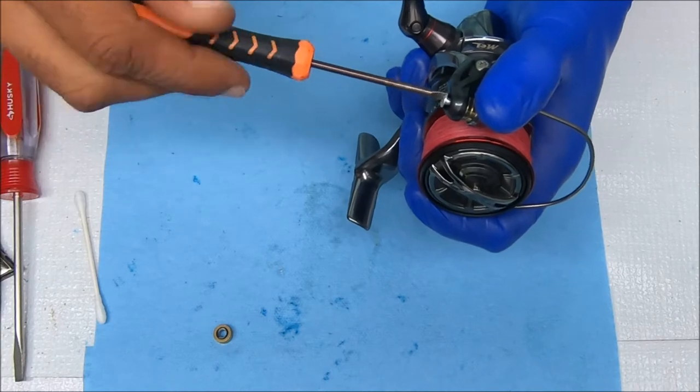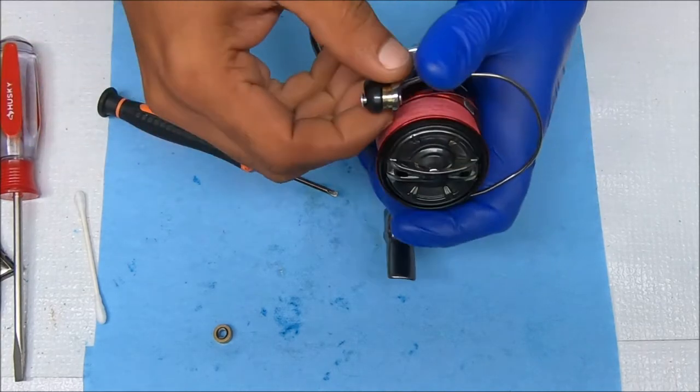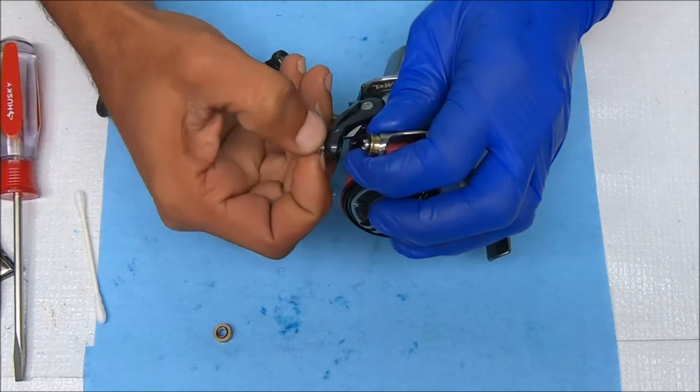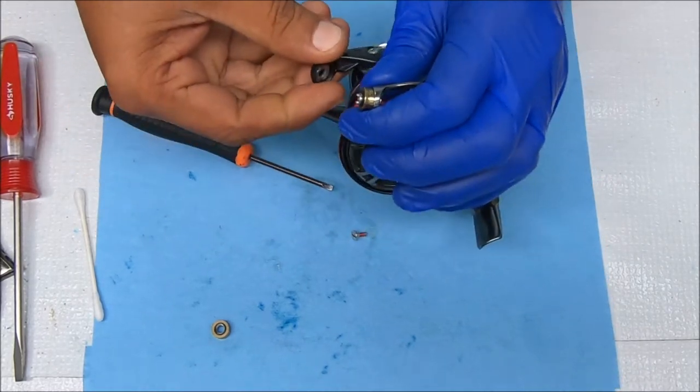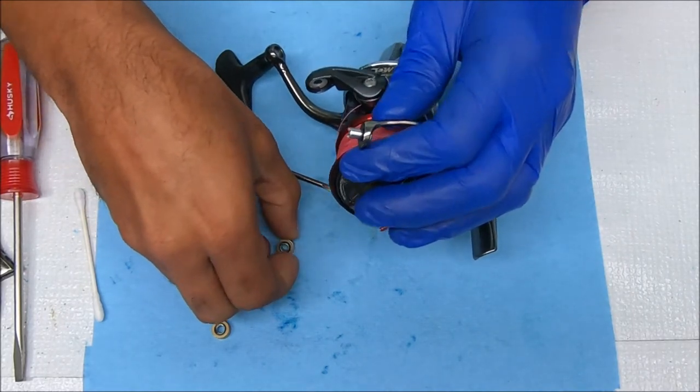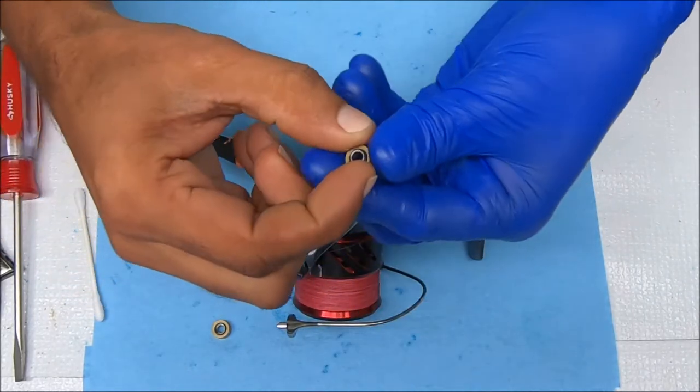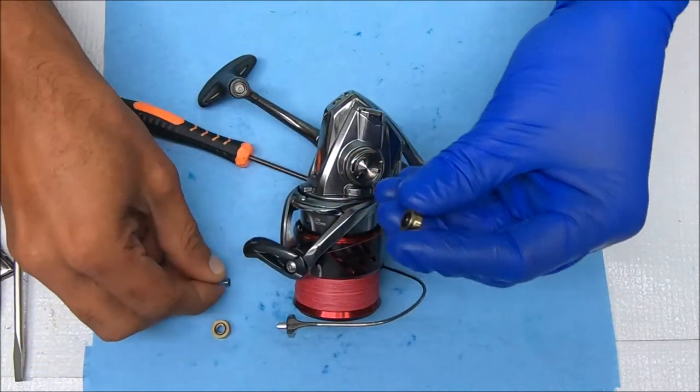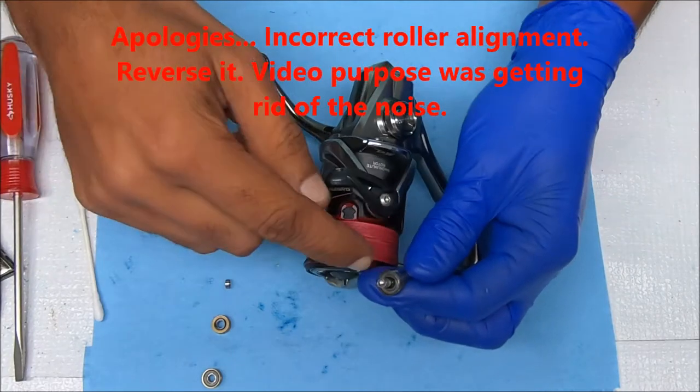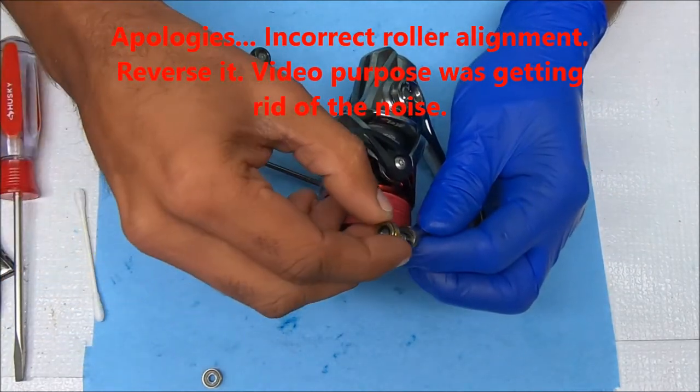I'm just unscrewing this. I'll pop that screw out. There's a metal piece that you need to keep, and it might be plastic in some of your reels, but you need to keep that. That's all we're taking off of there. There's another washer in there that's going to stay.